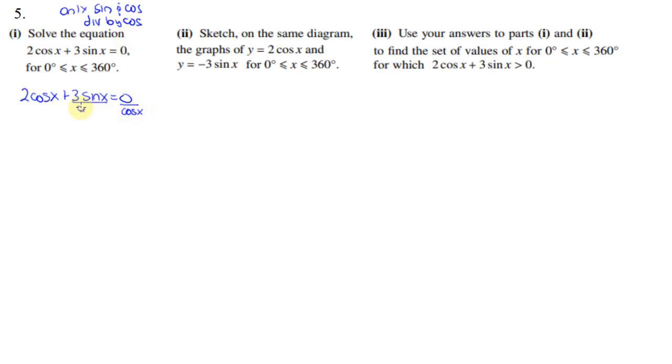So when we do that in this case we'll end up with 2 plus 3 tangent is equal to 0. And now all I've got to do is get the tangent x by itself and I end up with tangent x is equal to negative two-thirds.